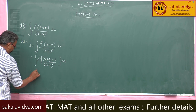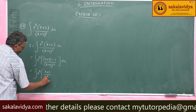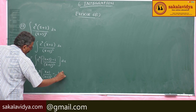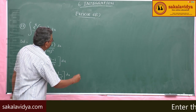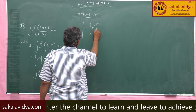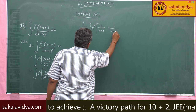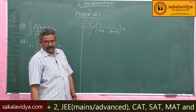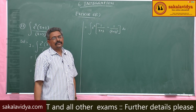This equals the integral of e^x times (x+3)/(x+3)² dx, which simplifies to the integral of e^x times [1/(x+3) − 1/(x+3)²] dx. What do we observe? If f(x) = 1/(x+3), then −1/(x+3)² is f'(x).